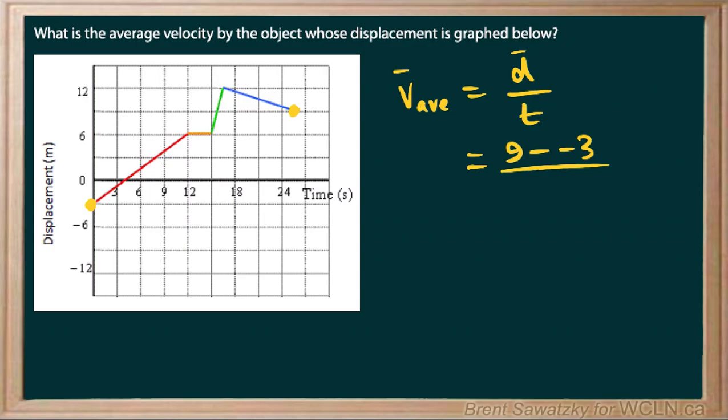So we're subtracting that negative 3. And the time it took from zero up to 25 and a half. And so that's meters and that's seconds. So on the top, we have 9 minus negative 3, or 9 plus 3.